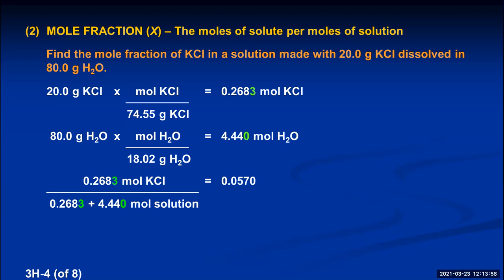Mole fraction is exactly what it says — a fraction. You could calculate a mole percent by multiplying the mole fraction by 100, which would come out to 5.70%. But chemists only need mole fractions; the percents aren't really relevant, as we'll see later in this unit.